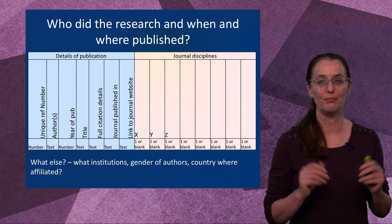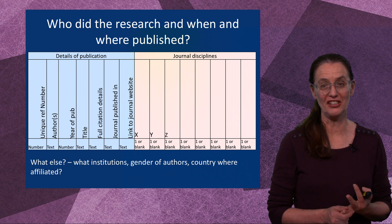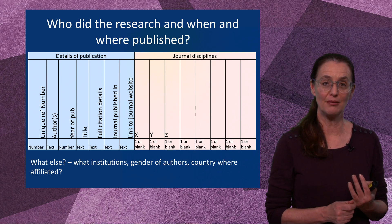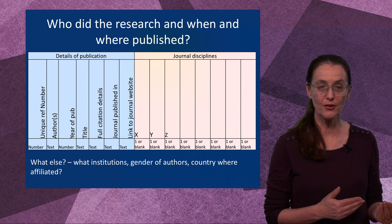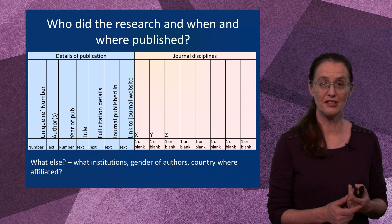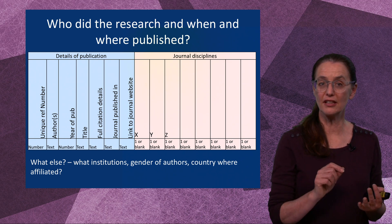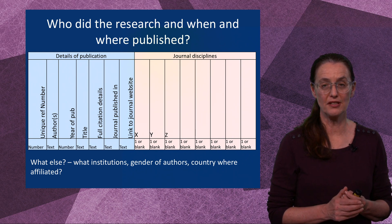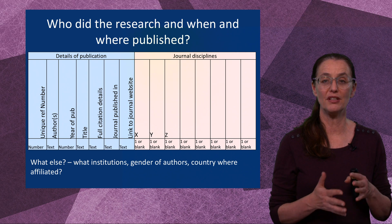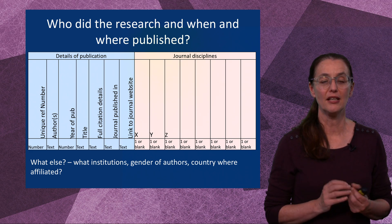Here are some default examples of how a database could be laid out. The first thing is you had questions about who did the research, when and where it was published — so you need categories for that. These are some basic ones we think should be in nearly all reviews: a unique number you assign each paper so you can re-sort your database and keep track; then who are the authors (text); year of publication (number); title (text); full citation details; the journal name; and a link to the journal website so you can click to get back to the original paper. Next, you're often going to want to put the journal disciplines — the number of subcategories depends on how many different journal disciplines there are, and remember that individual journals can actually fall into several discipline areas. There are some really neat tricks with that.